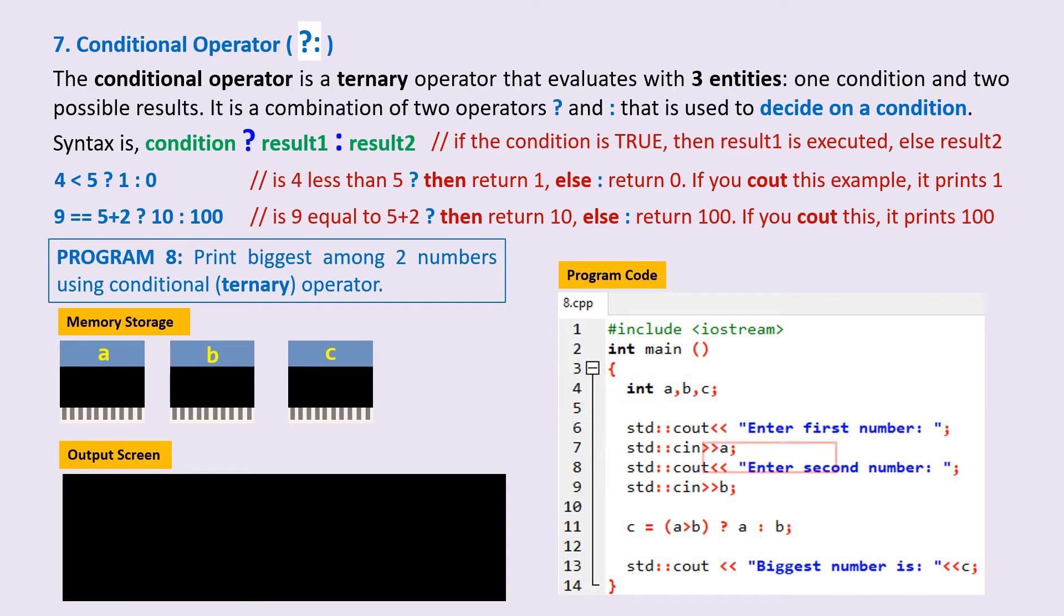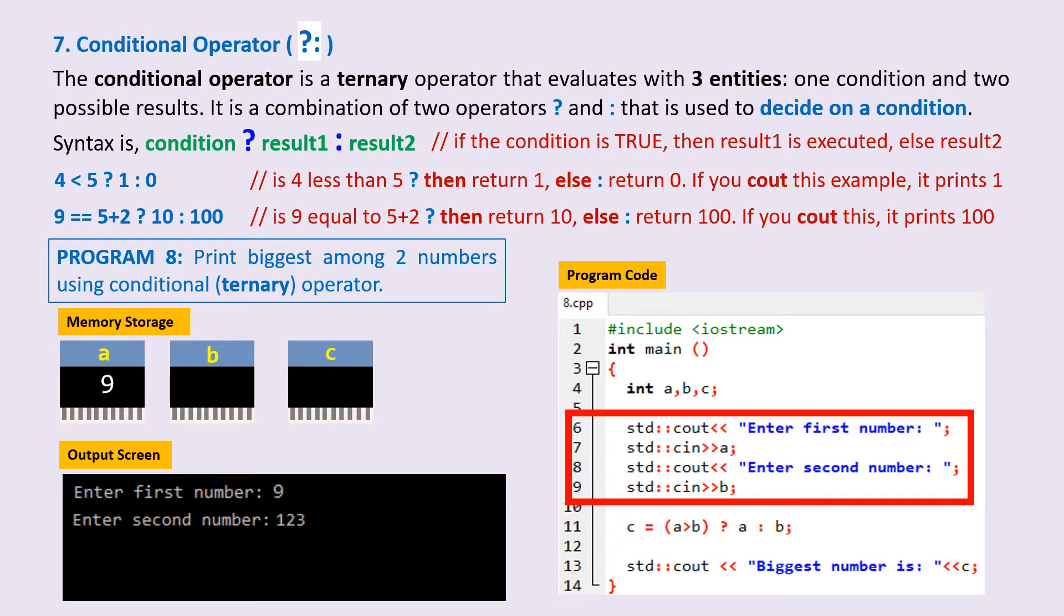Lines 6, 7, 8, and 9 do the input output operations. Note that I haven't used the statement 'using namespace std', and so I use the cout statement along with the std scope resolution operator. On the output screen, we are prompted: enter first number.